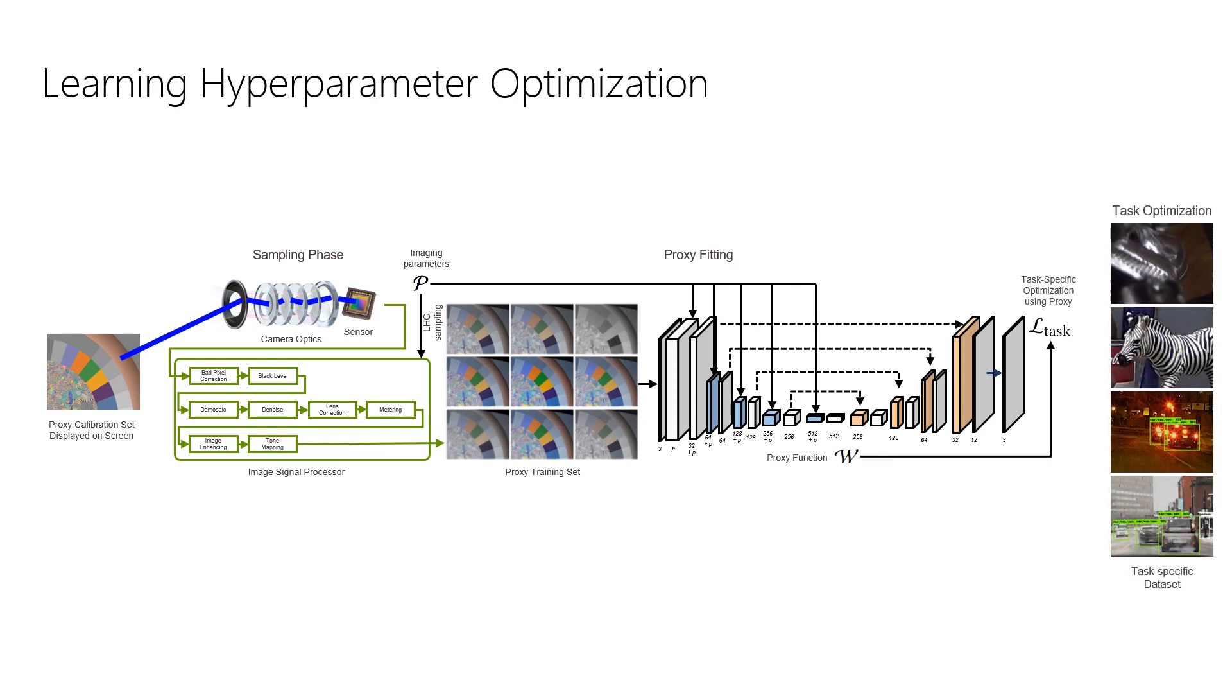The second stage is to use this differentiable proxy function to optimize the parameters for a given task. By passing in an unprocessed image into the ISP proxy function, which is now fixed, and calculating a loss from its output compared to a ground truth with a target quality, we can backpropagate gradients to optimize for a set of parameters that when applied to the original ISP will give us images with the target quality. The final parameters are then used at runtime on the hardware ISP.